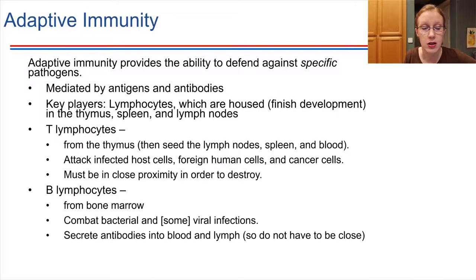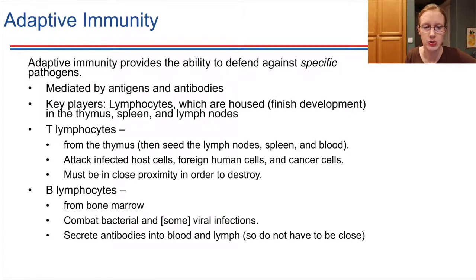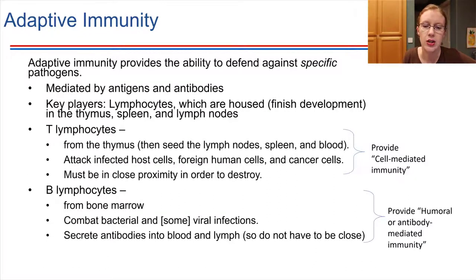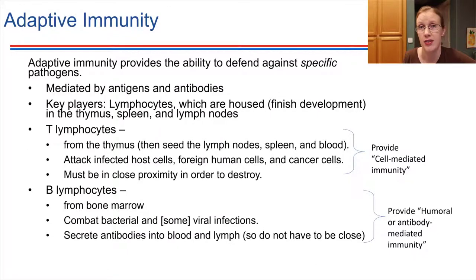B lymphocytes, in contrast with T lymphocytes, can do their job from a distance, because they are secreting antibodies which can go into circulation. T cells or T lymphocytes provide cell-mediated immunity — the cell itself has to be right up there next to the pathogen. But B lymphocytes provide humoral, or antibody-mediated, immunity. Humoral refers to the humors or fluids of the body, tying into the fact that antibodies circulate in the blood and the lymph.